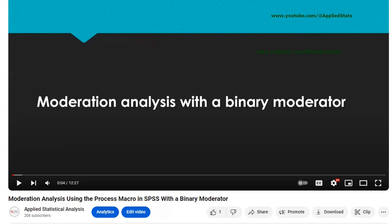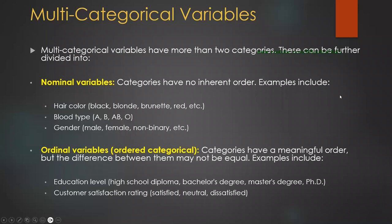Today, I'm going to talk about multi-categorical variables — they have more than two categories. In that video, I also showed how to enhance the interaction plot and how to export it from SPSS. Multi-categorical variables are variables that have more than two categories. We have two types: nominal variables, which have more than two categories and these categories are not ordered. For example, hair color, blood type, and gender.